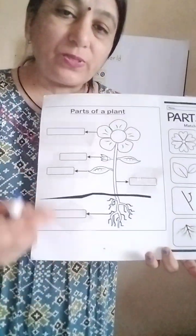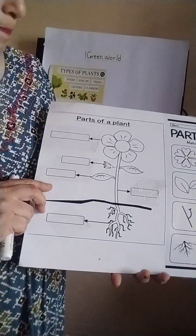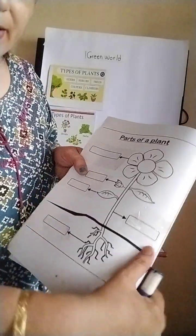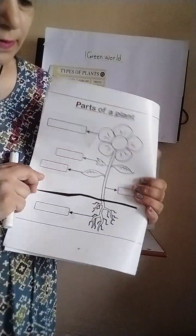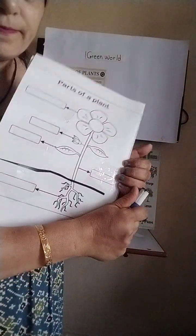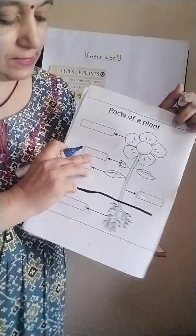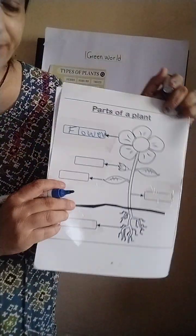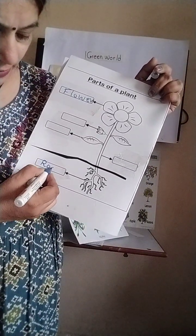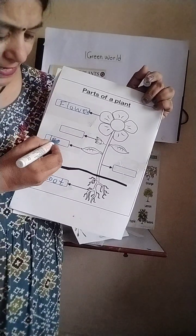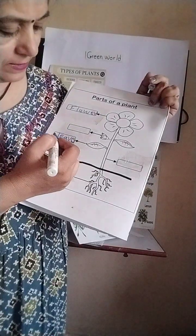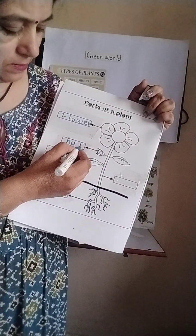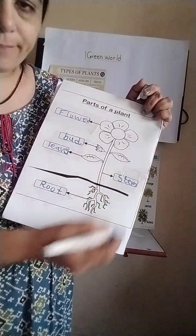Now children, let's do our worksheet. This is the first one - parts of the plants. We have to name the different parts of the plant shown. What is this? This is a flower. What are these? Roots. What are these? Leaves. What is this? This is the stem.